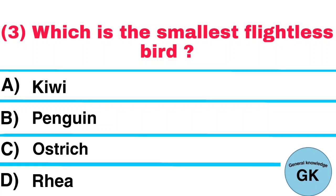Question number 3. Which is the smallest flightless bird? A. Kiwi. B. Penguin. C. Ostrich. D. Rhea. Answer: Kiwi.